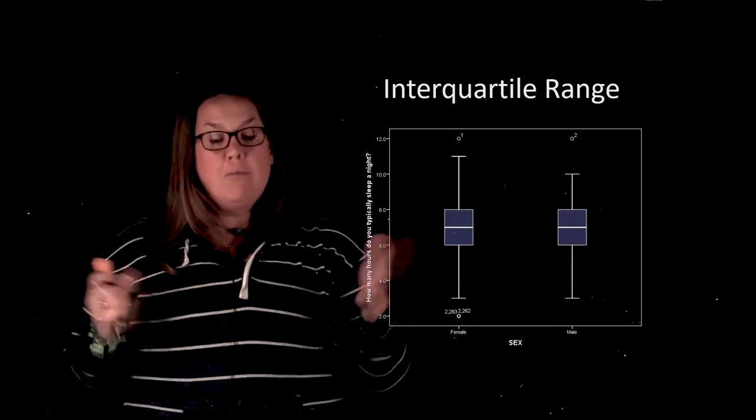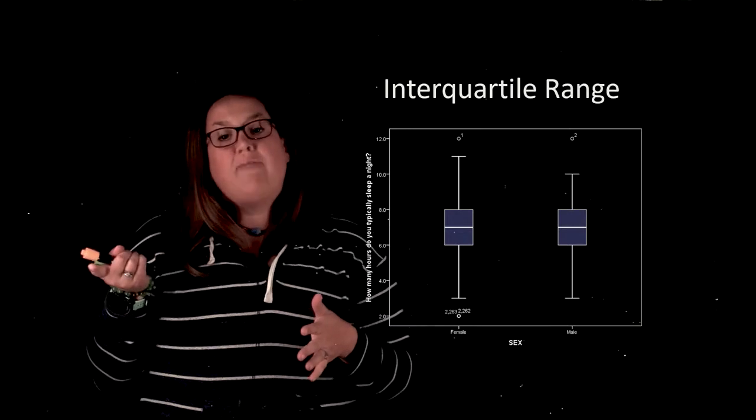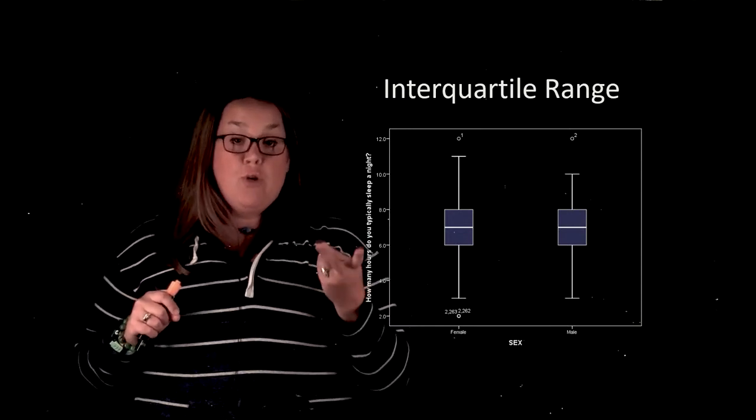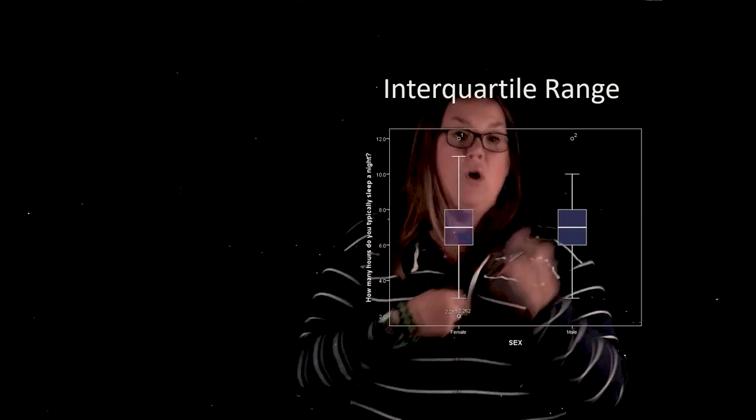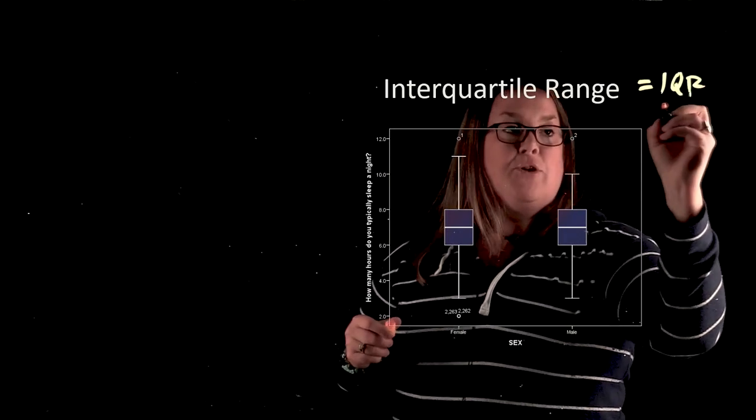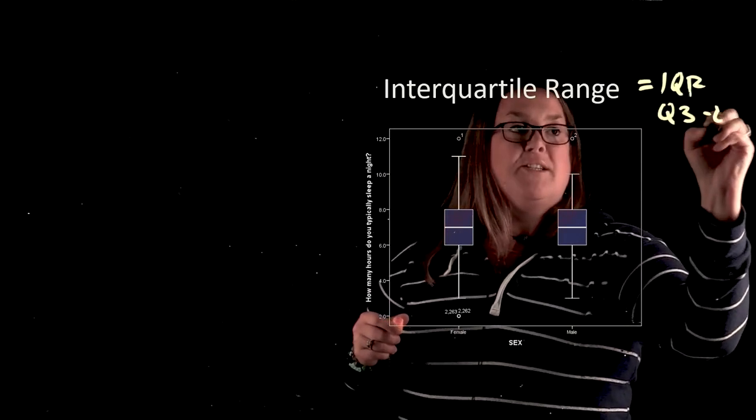So here we have a box plot again, and remember that the box plot, because it's a graphical display of the five-number summary, and two of those numbers are Q3 and Q1, which if you remember, with the interquartile range, we just said that this was IQR, and it's measured by taking Q3 minus Q1.